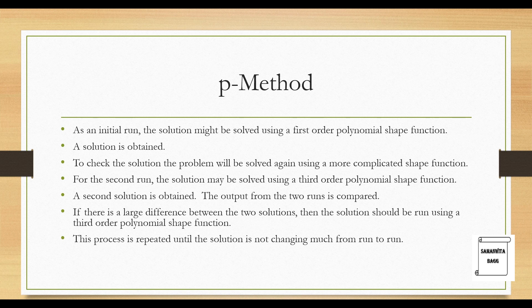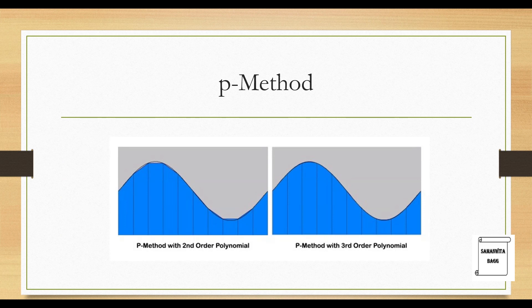So in the H method, what you do is you increase the number of nodes. In P method, what you do is you increase the order of the polynomial. So that helps you get better solution. You can see here that the mesh is still coarse. The h value which you have seen before is constant for both the diagrams. For the first diagram, you can see that it is P method with second order polynomial and this is P method with third order polynomial. You can see that your solution is getting better. You are able to capture the area better and get better solutions.